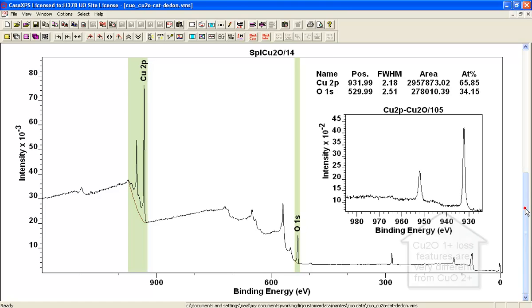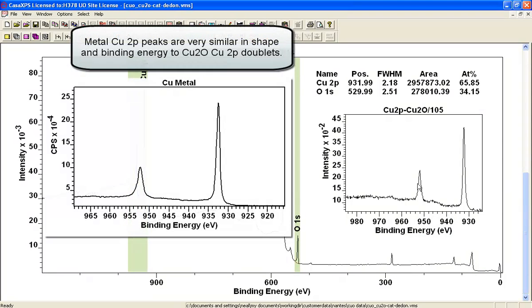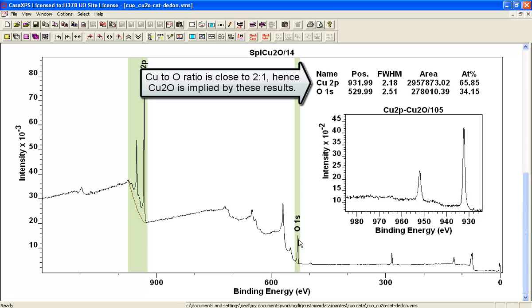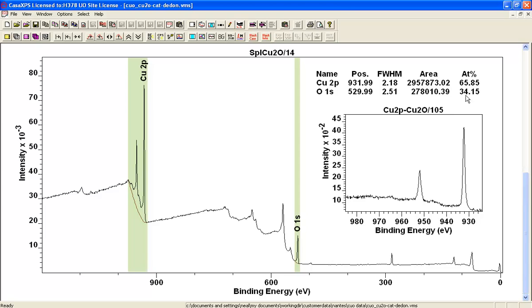Similarly, if we look at a standard material for a copper 1+, then we have, again, a doublet here, very characteristic and very different from the 2+. And looking at the ratio of these regions, and we're applying the same background and the same sensitivity factors, so we're trying to do a fair test, you can see here that the copper is much more than the oxygen, and it's about 2 to 1. So this is the copper 1+, and that's consistent with what the sample was.